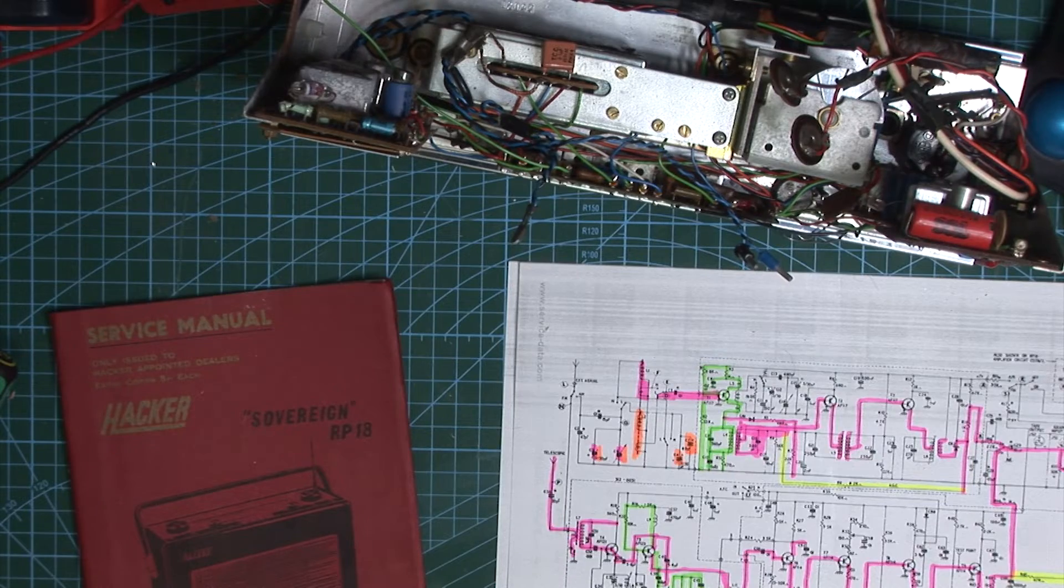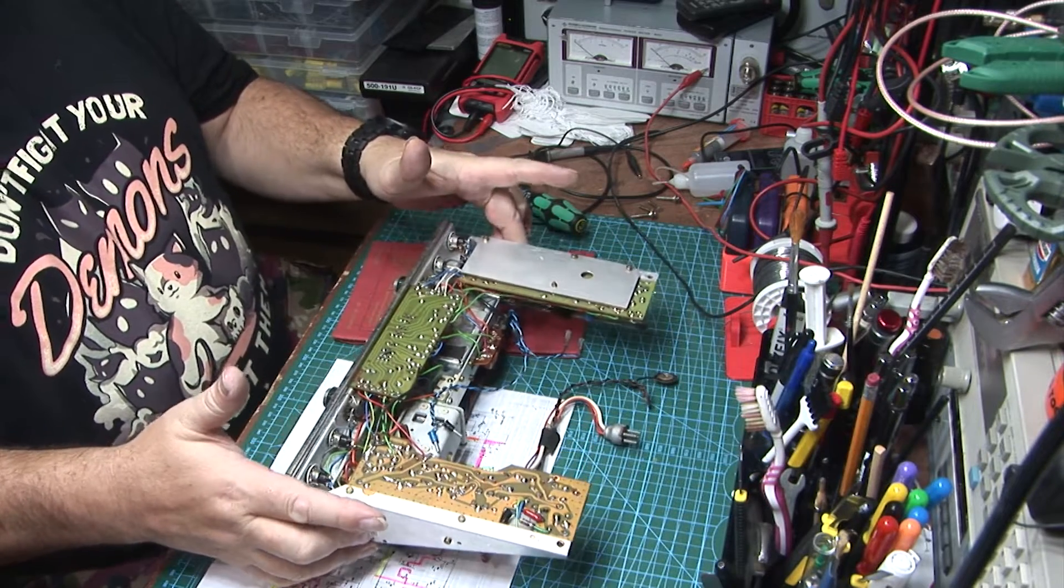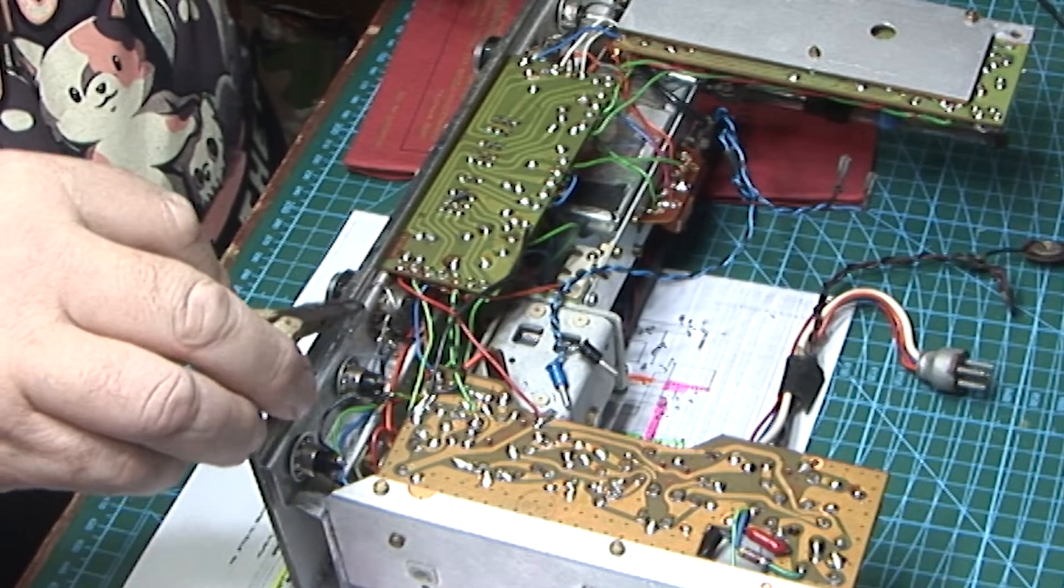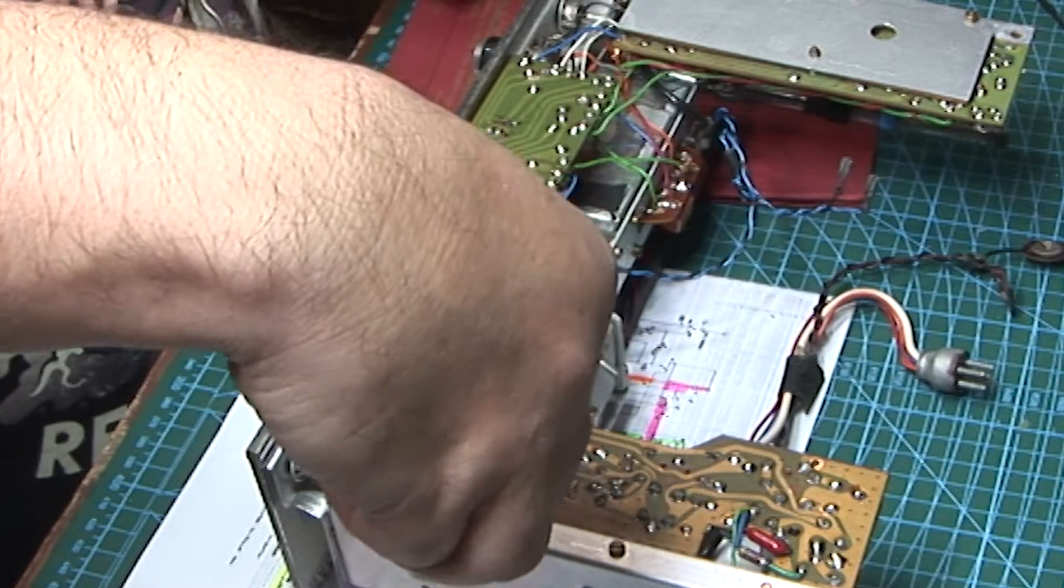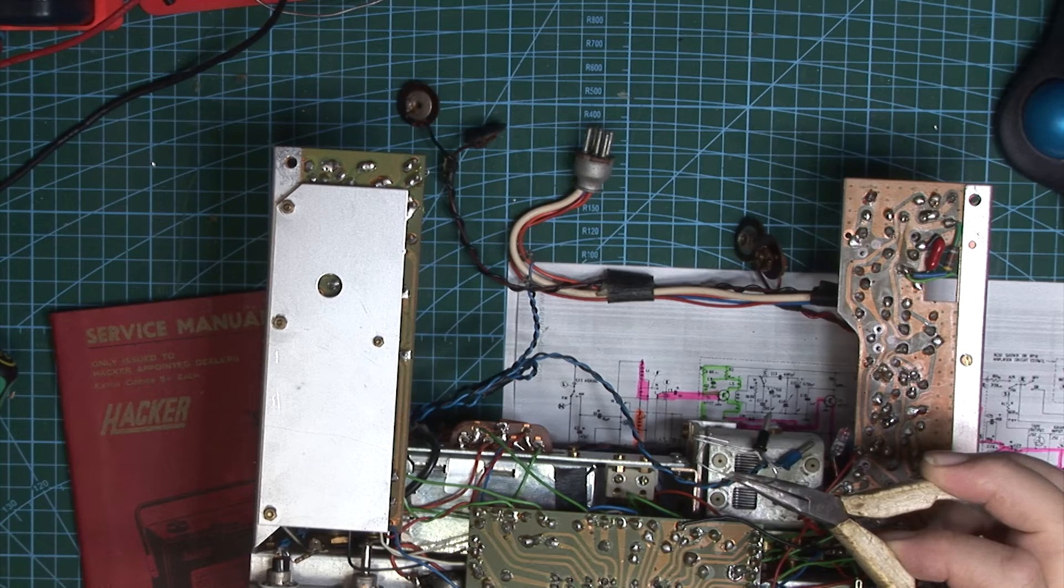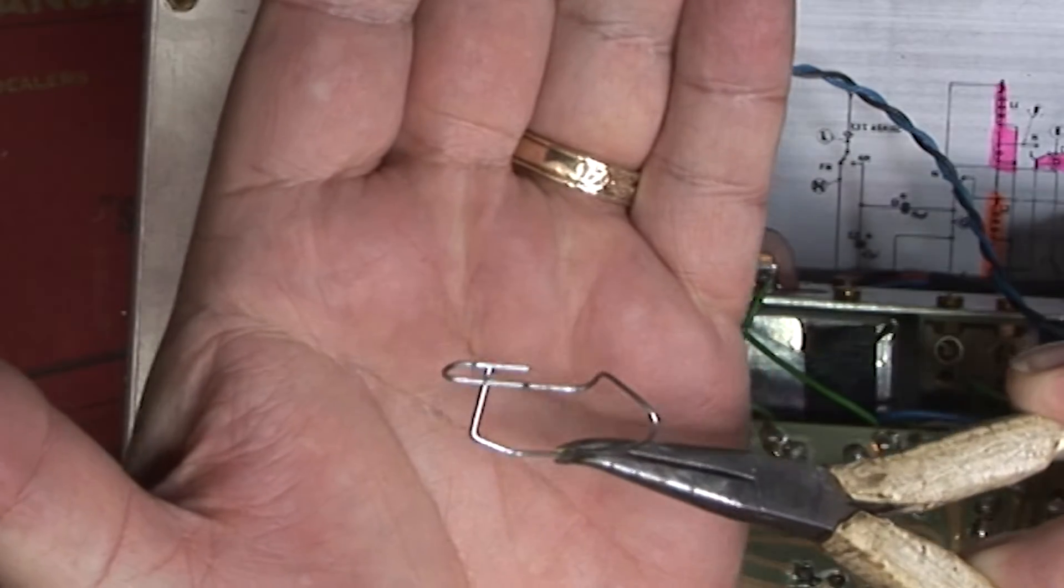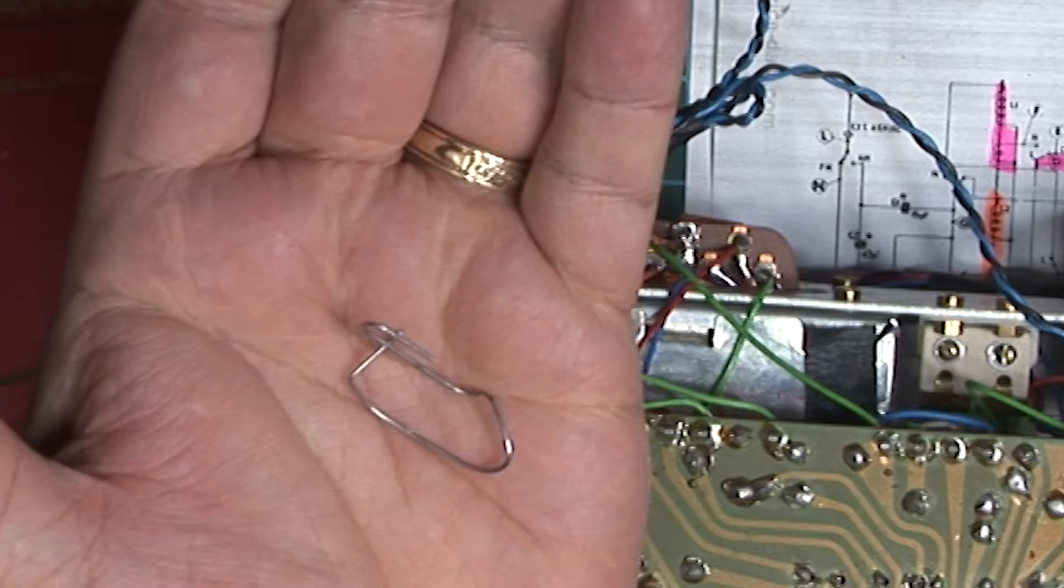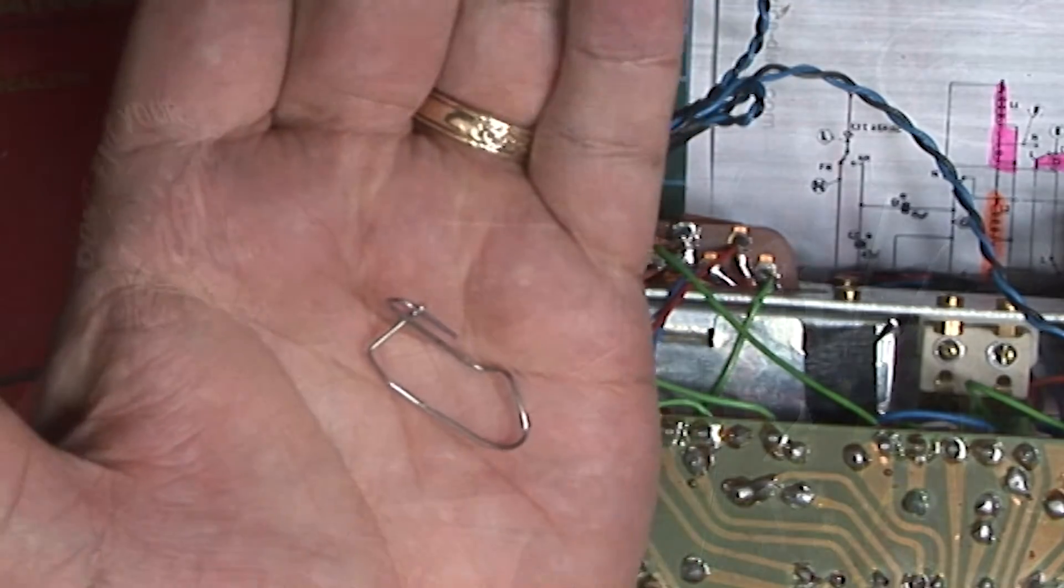And we can now put the case to one side. The first thing I find after I've taken this out is a bent paper clip. Of all things to find in a radio, near the circuit board, that is the one thing you pretty well don't want to find.